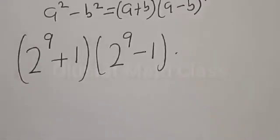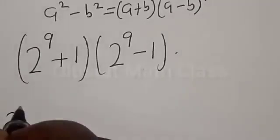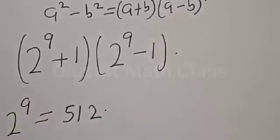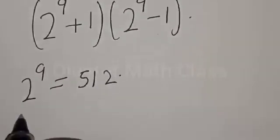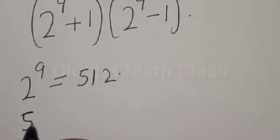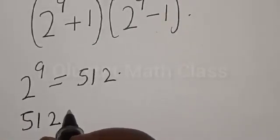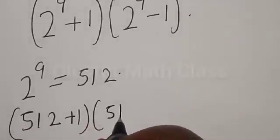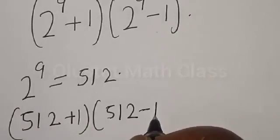Now, 2 raised to power 9 is equal to 512. Now, let's substitute back. We have 512 plus 1 multiplied by 512 minus 1.